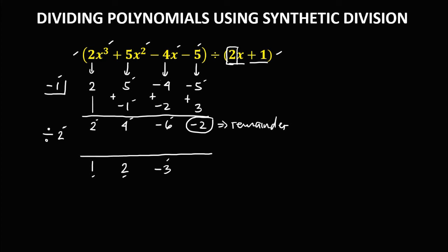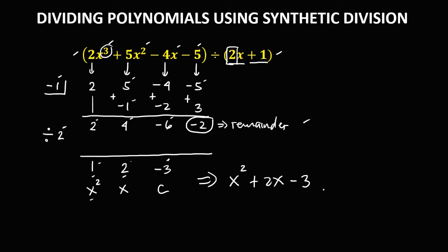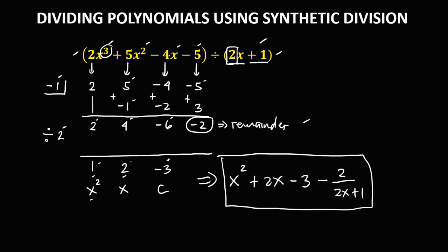For the final answer, since the highest exponent of the dividend is 3, minus 1 for the highest exponent. So the first term is x squared, the second term is x to the power 1 or x, and the last term is the constant. So we have x squared, then positive 2x, then minus 3, then for the remainder since it's negative, that's minus 2 over the divisor 2x plus 1. So this is now the quotient of these polynomials.